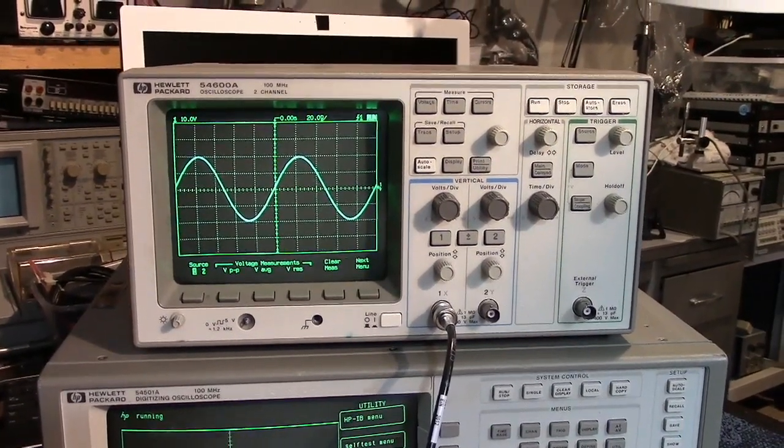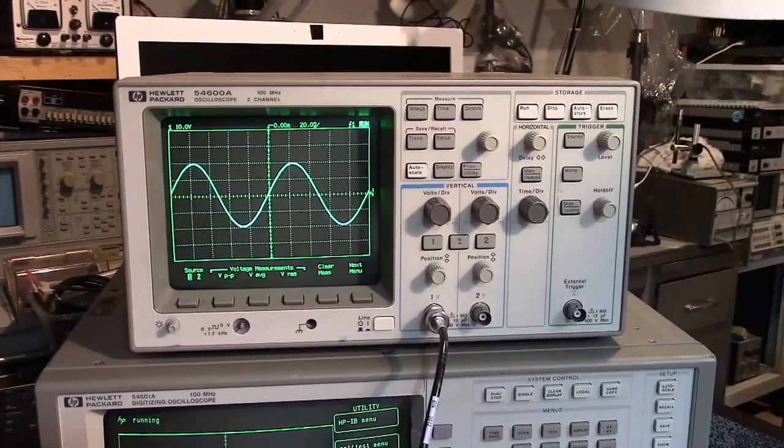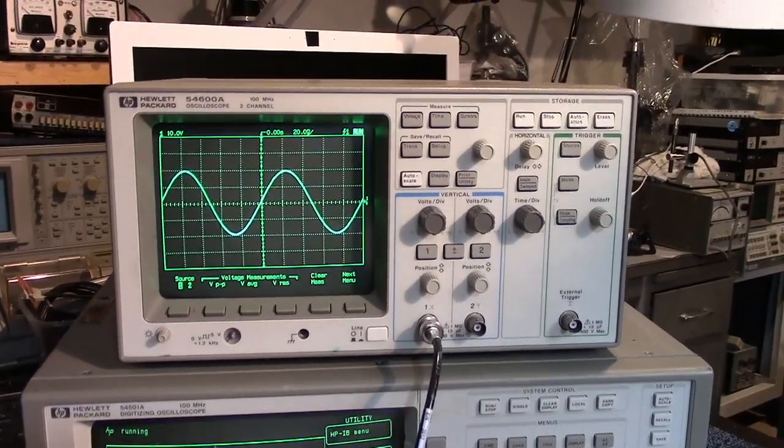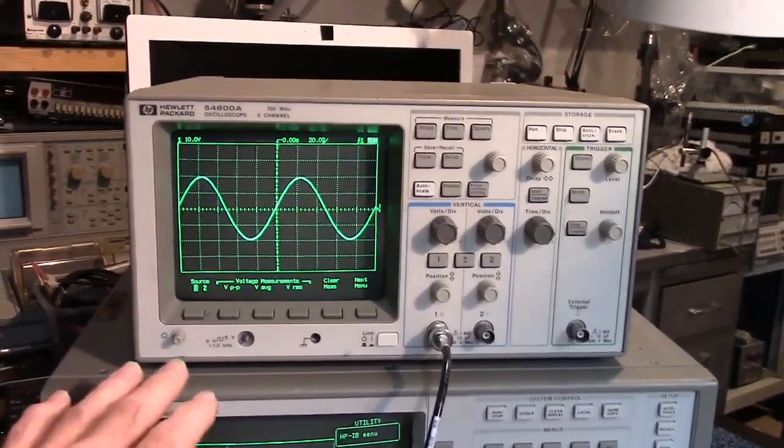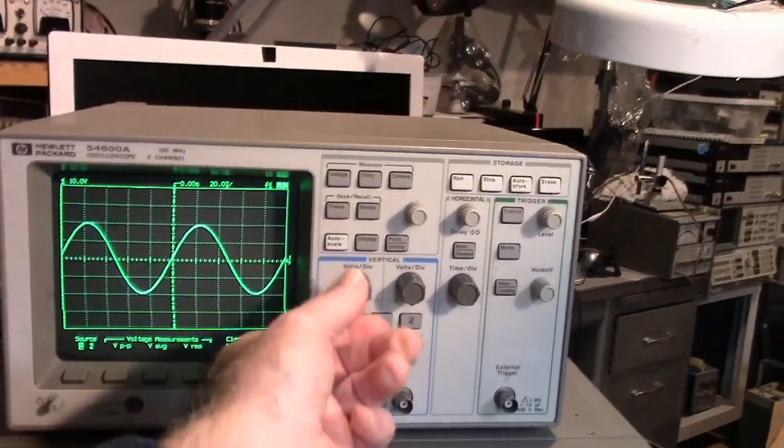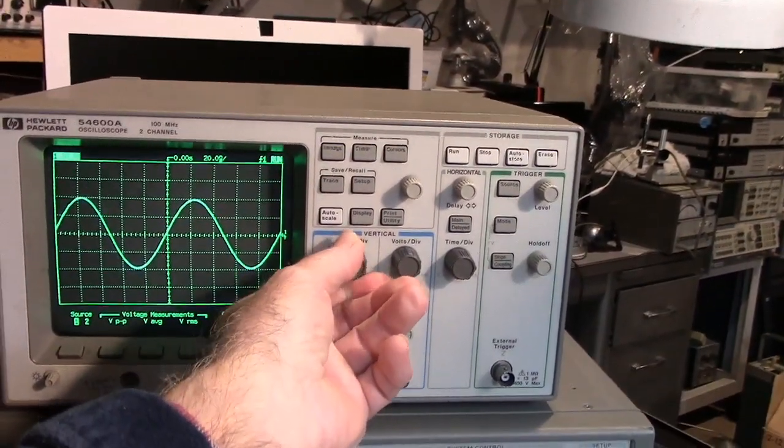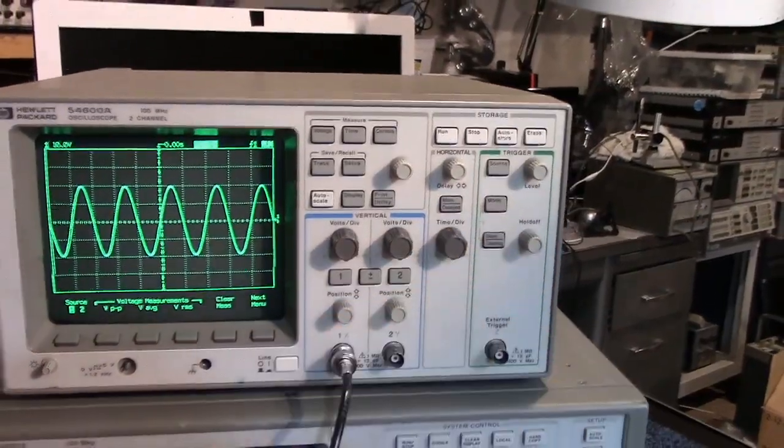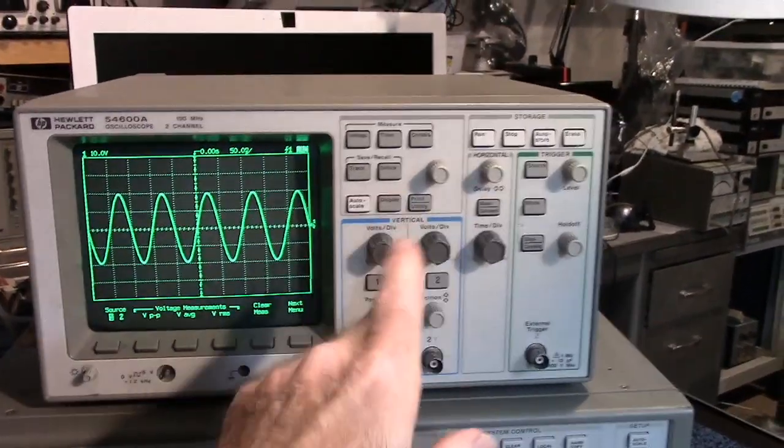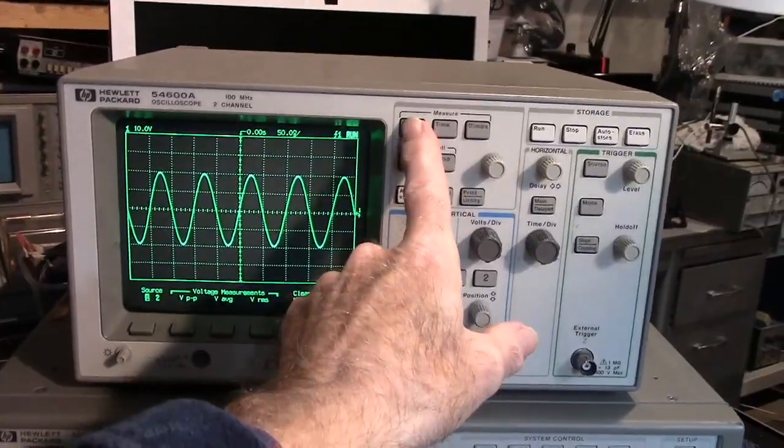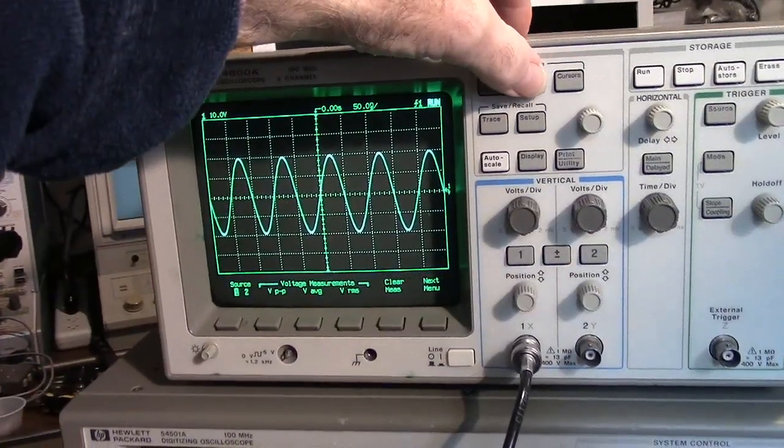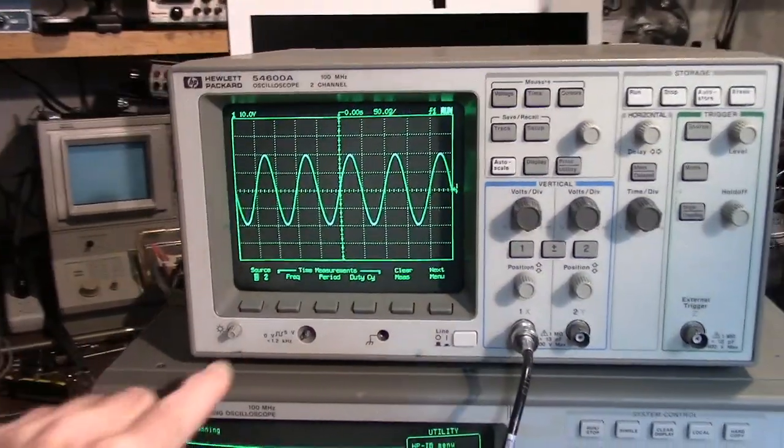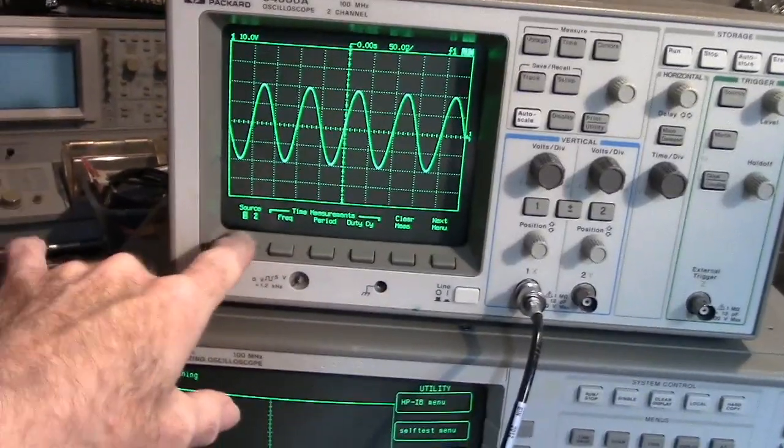This is an HP 54600a oscilloscope that was given to me by a friend. It's got a few little problems with it. It appears to be working for most of the functions here, but the problem is with the measure functions. I can change the measure functions, but the problem is the soft keys aren't working.